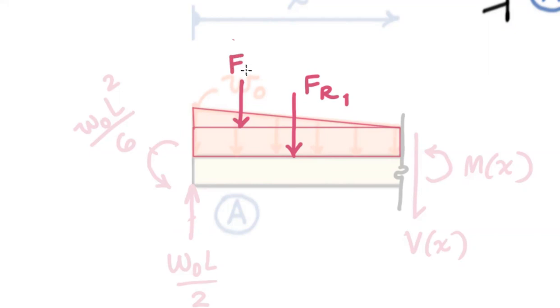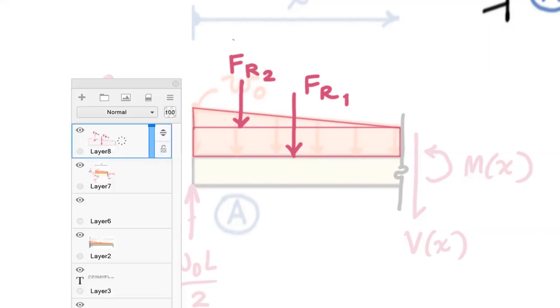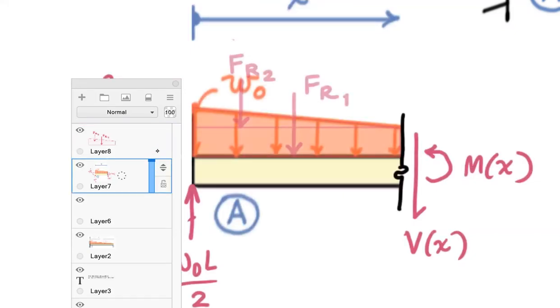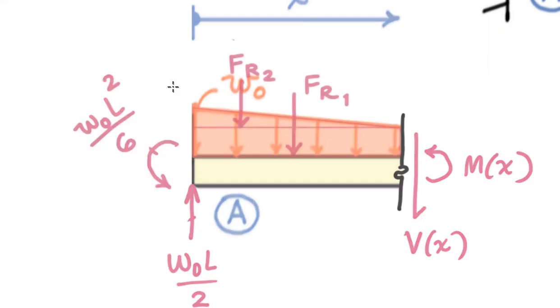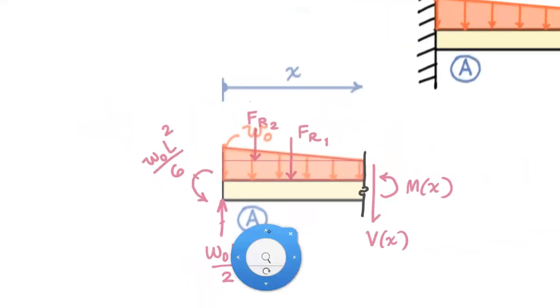So we would then need to get this area and put a resultant force at the third point of that triangle. We could call that F_r2. So we've got a lot of stuff going on on that free body.